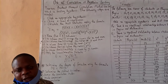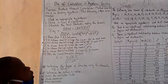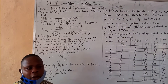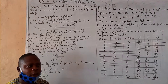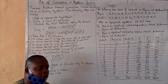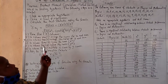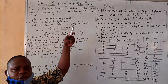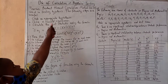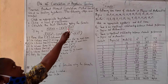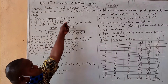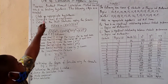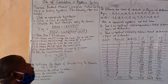Good afternoon, class. I hope you are staying safe at home. We have almost exhausted our course outline before the coronavirus. There was just one topic remaining, and that's the use of correlation in hypothesis testing. Today we are going to look at the use of correlation in hypothesis testing using the Pearson Product Moment Correlation method, which can also be used in hypothesis testing.